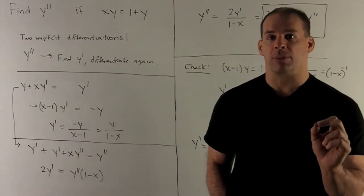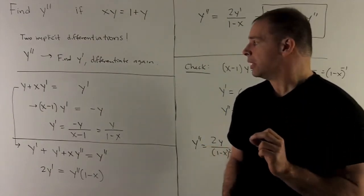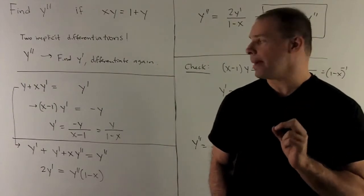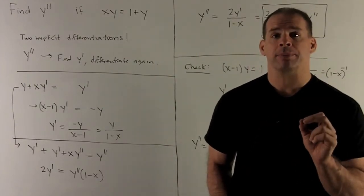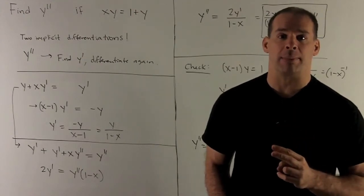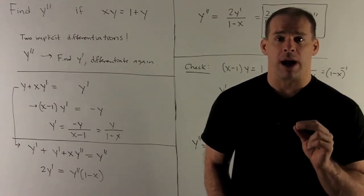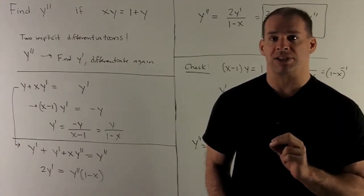I collect all the y prime terms on one side, non-y prime terms on the other. So it'll give me x minus 1 times y prime equals minus y. I divide by x minus 1. And notice we can multiply top and bottom by minus 1 over minus 1 just to fix the sign. So I'll have y prime equals y over 1 minus x.